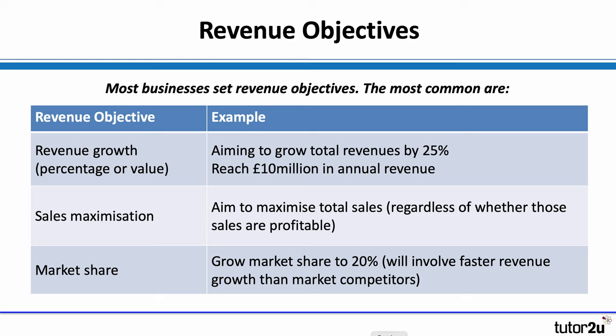Revenue objectives are perhaps the most common financial objectives set by businesses of all sizes and types. Examples include a specific value — such as £10 million in sales per year — or a percentage growth in revenues, for example growing revenues by 20% per year. These are fairly easy to measure and may be linked to the sales budget. Other revenue objectives include sales maximisation — a potentially dangerous objective where the aim is to grow as fast as possible regardless of whether those sales are profitable — and market share, which requires increasing revenues faster than market growth.